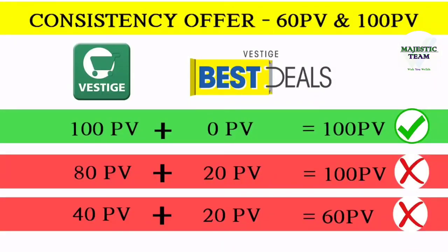Lastly, let's see the consistency. There is a consistency in Vestige and a 100 PV concept. For 60 PV, we will continue to purchase for 4 months and we will get a voucher for Rs.1250 for the 4th month. If we continue to purchase for 4 months at higher PV, we will get a voucher for Rs.2500 for the 4th month.